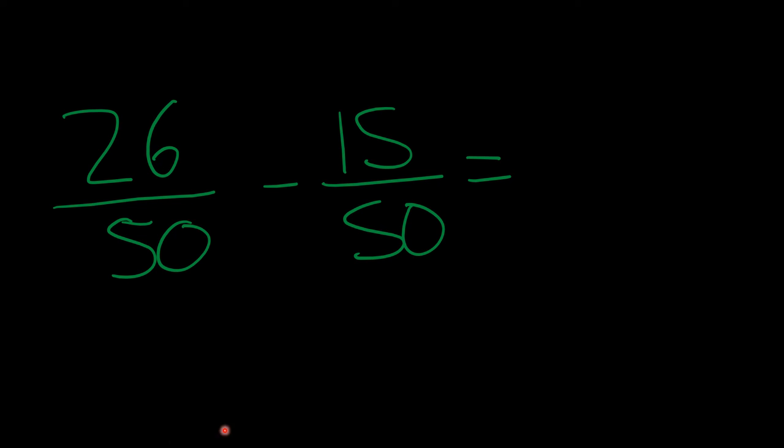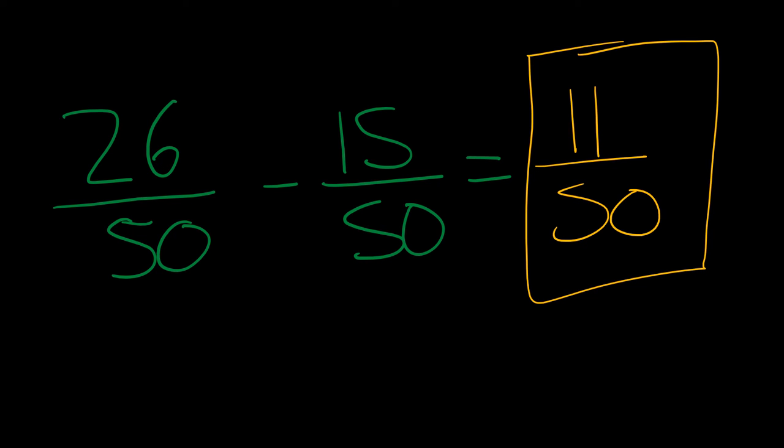Awesome. In case you guessed it, my denominator will be 50 because I have a common denominator of 50. 26 minus 15 is 11, so my answer will be 11 over 50. See you guys, take a break. Thank you.